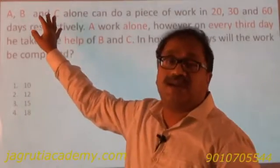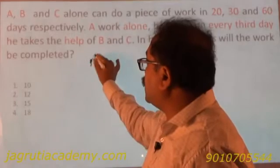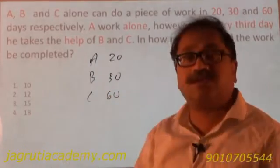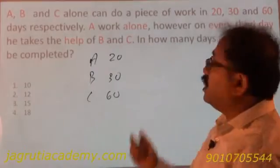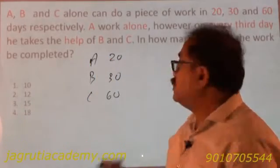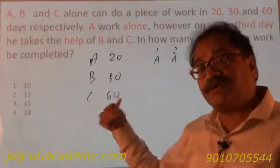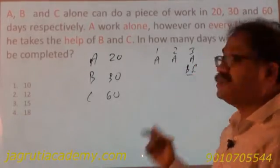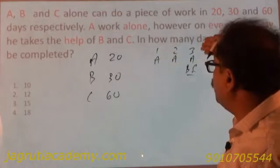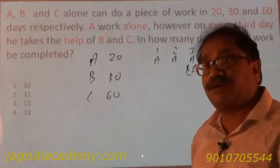There are 3 people A, B and C and they can complete the work in 20, 30 and 60 days respectively. A alone works, however every third day he takes the help of B and C. That means the first day A works, second day A works, and on the third day A, B and C all three work. The same thing continues again.